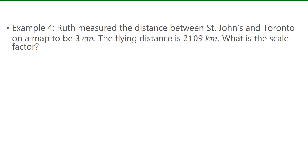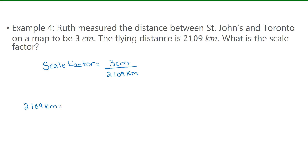For example 4, Ruth measured the distance between St. John's and Toronto on a map to be 3 centimeters. The actual flying distance between the two cities is 2,109 kilometers. The scale factor is the map distance (3 cm) divided by the actual distance (2,109 km). Since the units differ, I'll convert 2,109 kilometers to centimeters: first multiply by 1,000 to get meters, then by 100 to get centimeters, giving 210,900,000 centimeters.